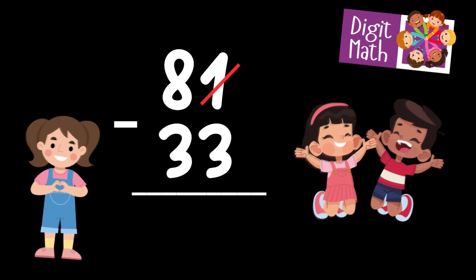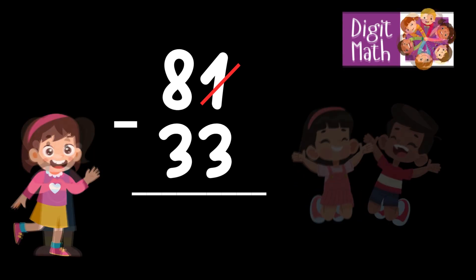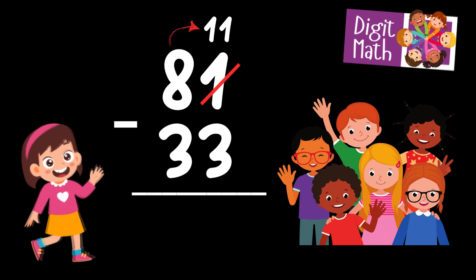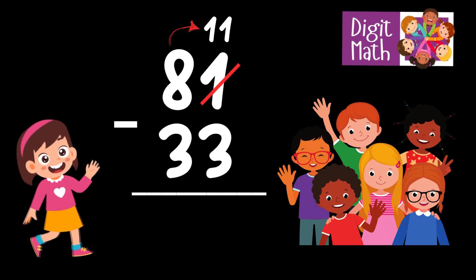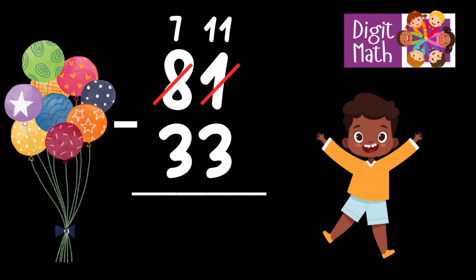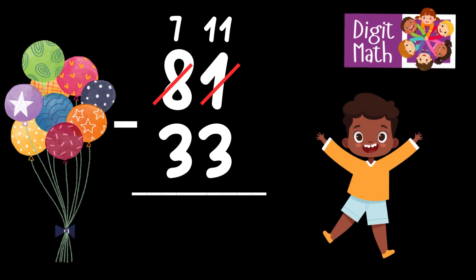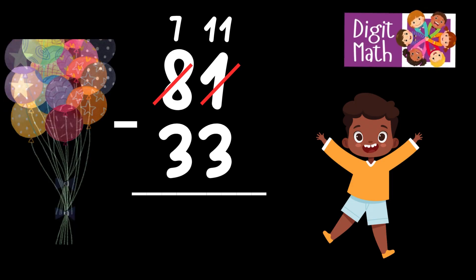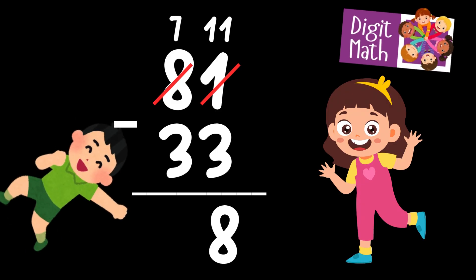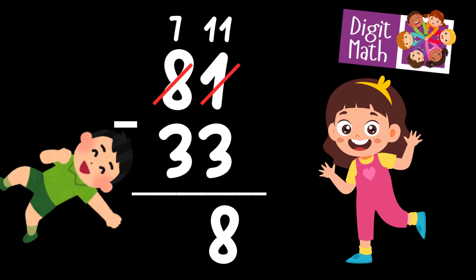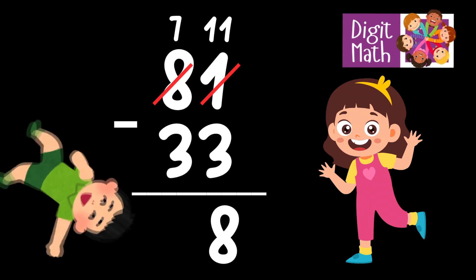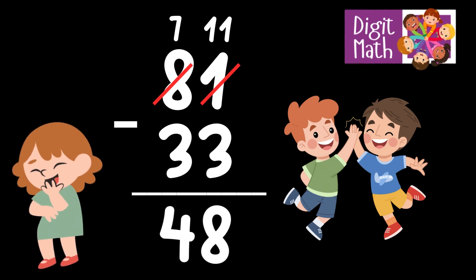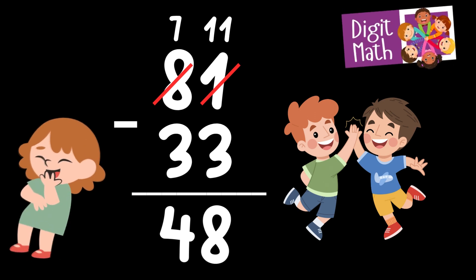In the Units column, we have 1 minus 3. Since it's not possible to subtract 3 from 1, we need to borrow from the Tens column. In the Tens column, we have 8. We take 1 from the Tens, leaving 7 in the Tens column and turning the Units column into 11. Now we have 11 in the Units column. Subtract 3 from 11, which equals 8. In the Tens column, we now have 7. Subtract 3 from 7, which equals 4. So the final result is 81 minus 33 equals 48.